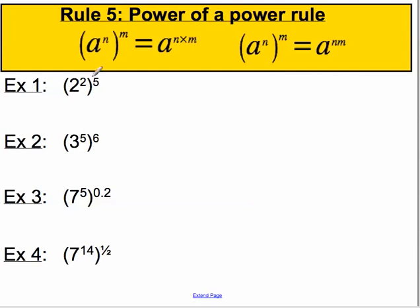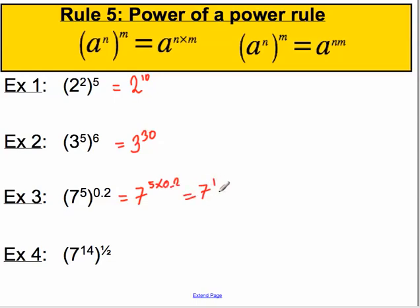Let's do a few examples. 2 squared all to the power of 5 equals 2 to the power of 2 times 5, or 10. 3 to the power of 5, all to the power of 6, equals 3 to the power of 5 times 6, which is 30. 7 to the power of 5, all to the power of 0.2, equals 7 to the power of 5 times 0.2, which equals 7 to the power of 1, or 7. And lastly, 7 to the power of 14, all to the power of a half, equals 7 to the power of 14 multiplied by a half, which is simply 7.